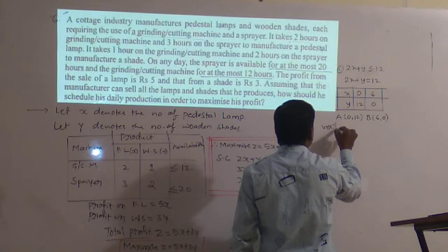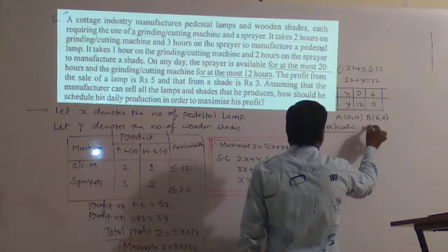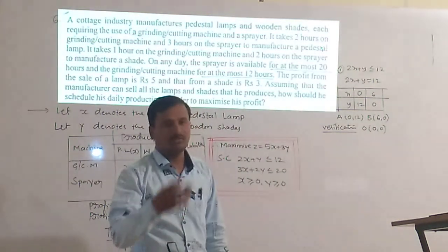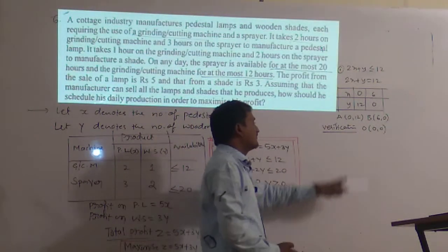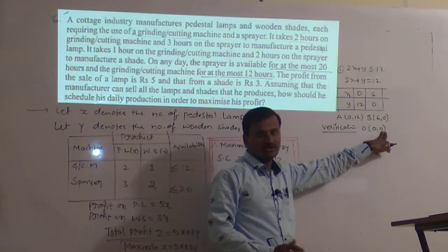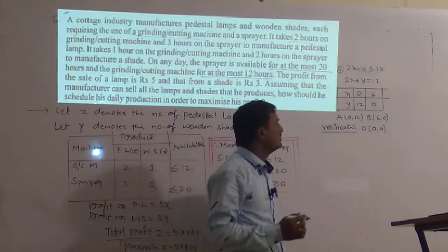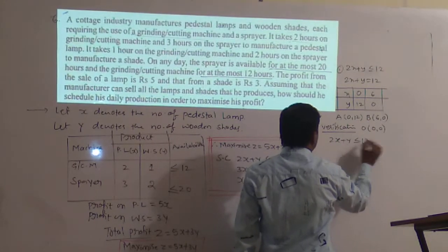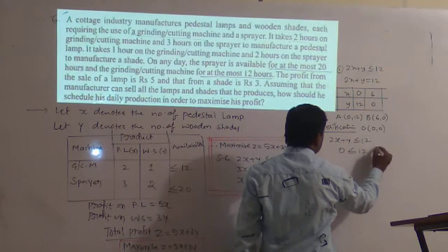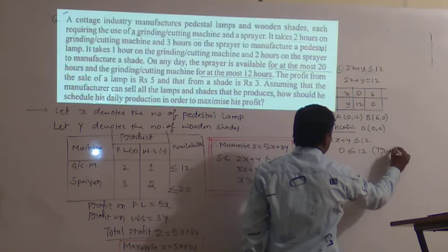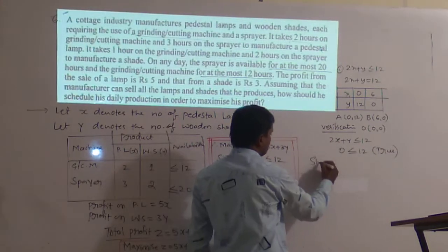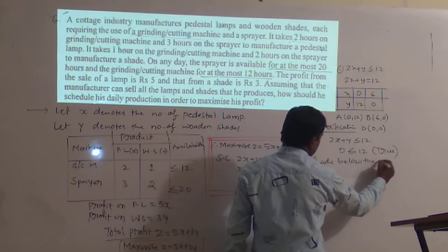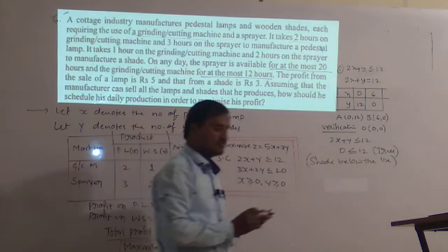We substitute the coordinate of the origin to determine whether to shade below or above the line. Substituting in the inequality 2x + y ≤ 12 gives 0 ≤ 12, which is true. If it is true, we shade below the line.